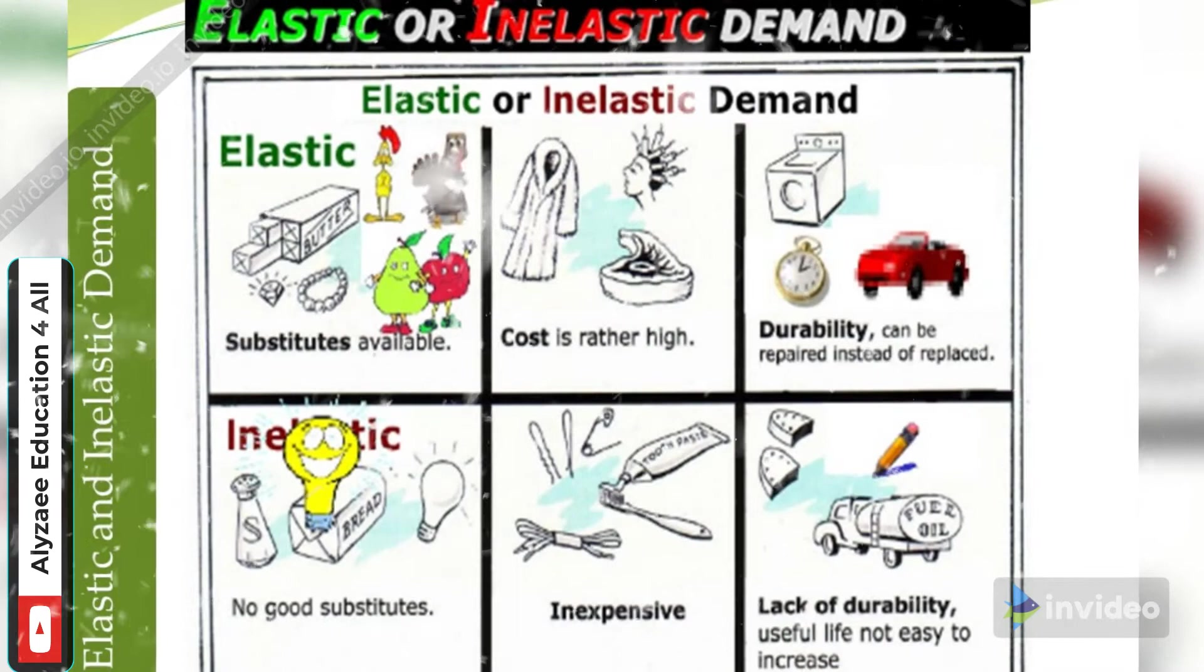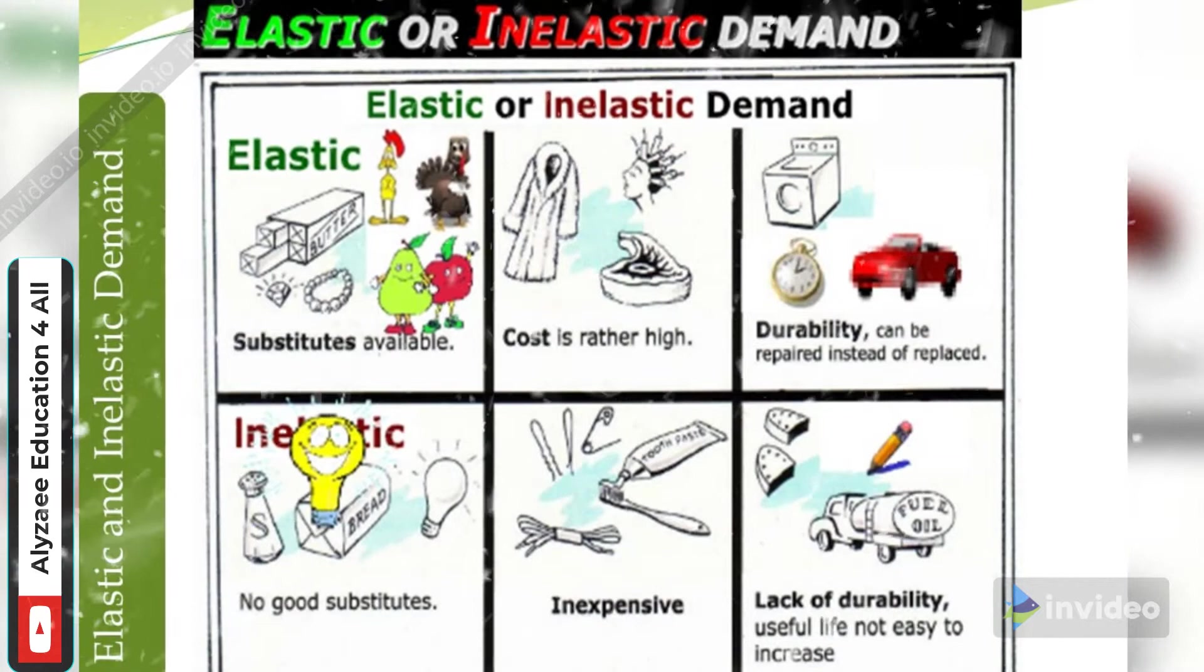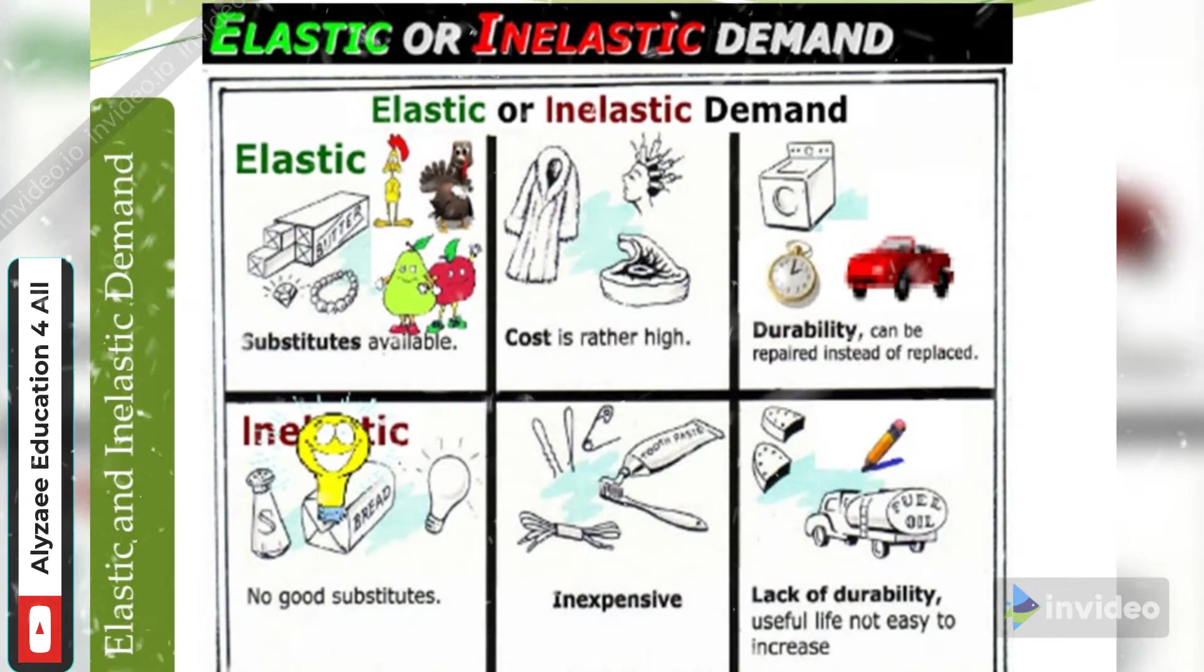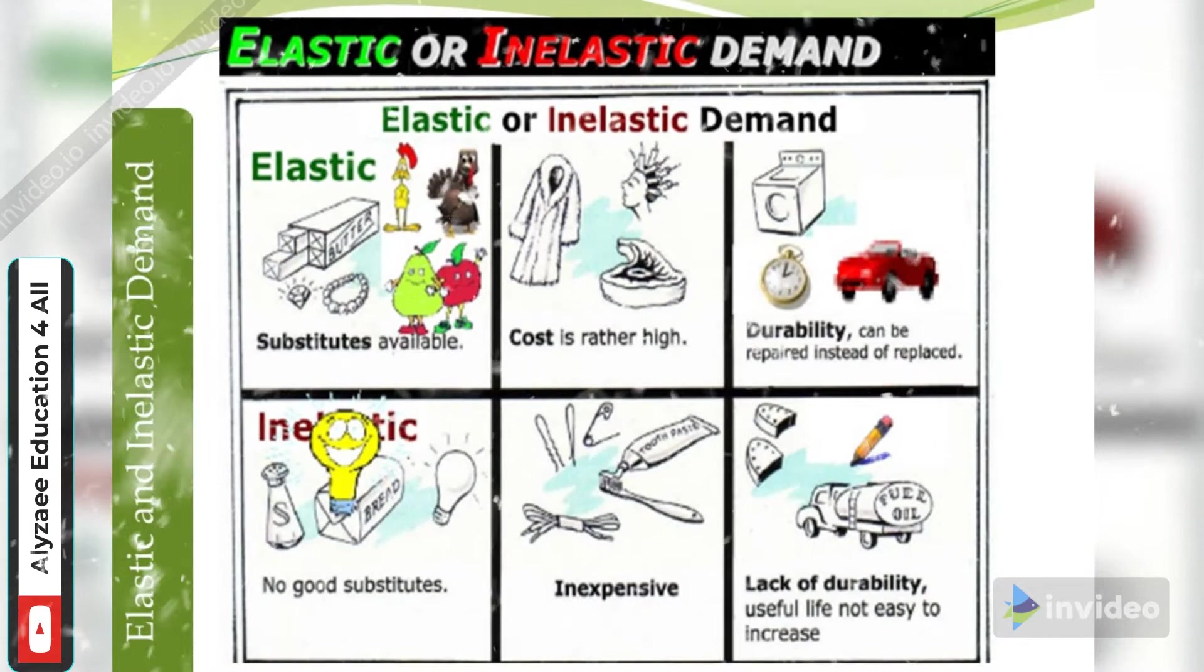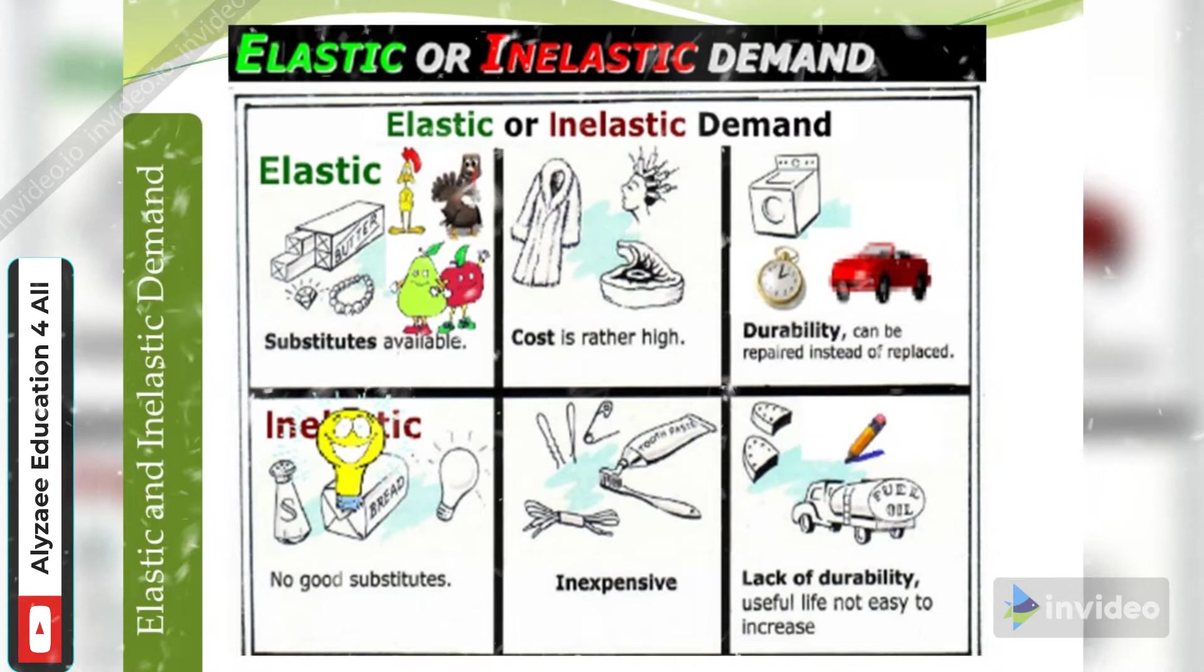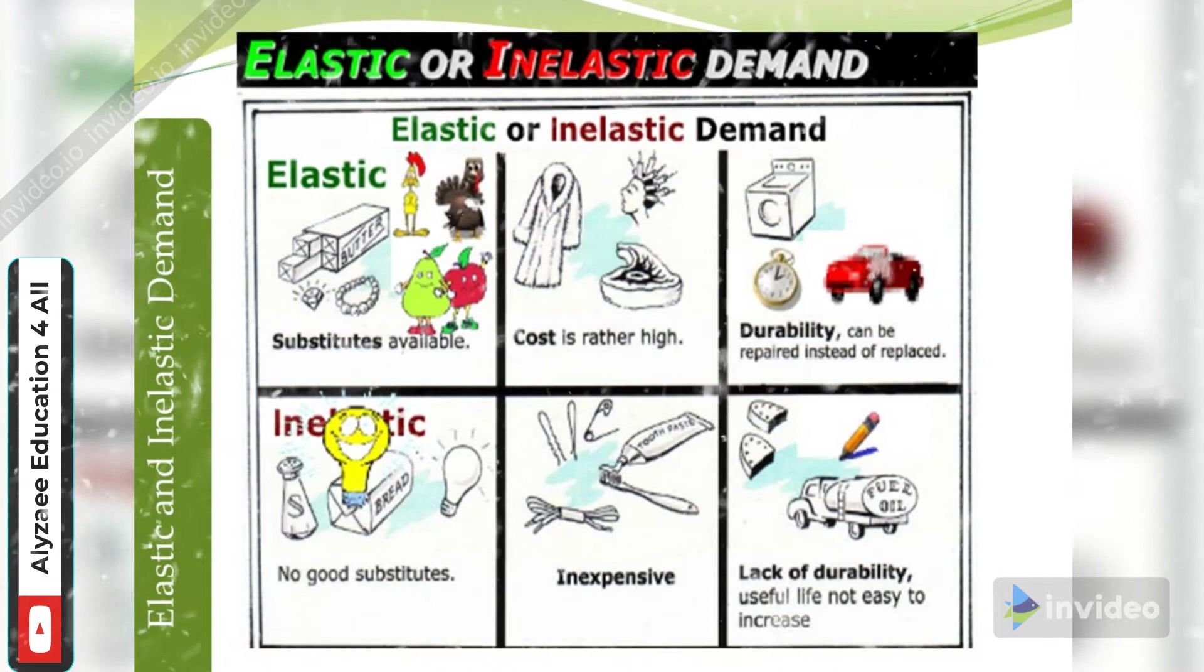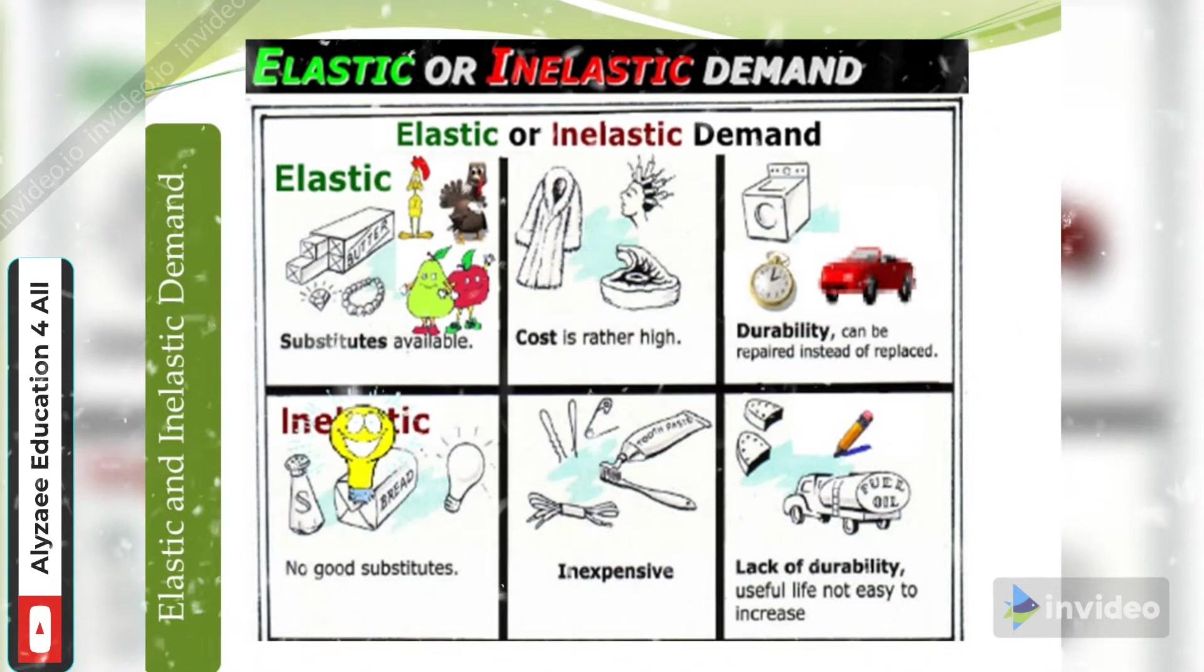Inelastic demand - with these examples we are trying to understand these things. When we are talking about elastic things, so elastic are substitutes when there are most substitutes available, the cost is rather high, and items can be easily repaired instead of replaced. When discussing inelastic, it means that no good substitutes and these are inexpensive, very cheap items and lack of durability, so useful life not easy to increase.